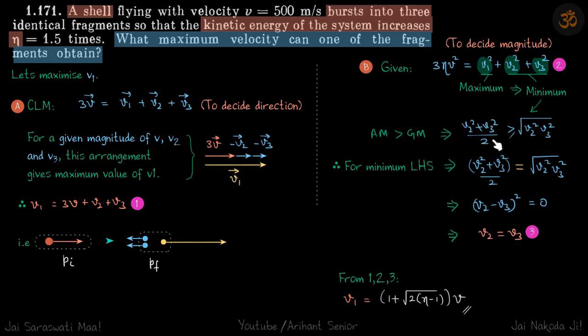So if you want the minimum value of this, that is the square root of v2 squared times v3 squared, and we want minimum value, so we'll just change this inequality into equality. If you just cross multiply 2 here and v2 v3 will just come out.